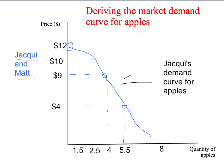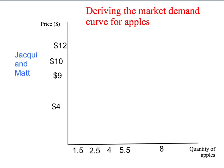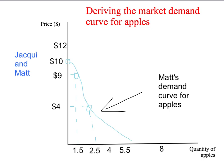This blue downward-sloping demand curve is Jackie's demand curve that we've seen before. Now what about Matt's demand curve? Let's suppose that Matt doesn't like apples as much as Jackie. If the price of apples is $10 or more per kilogram, he doesn't want to buy any. If the price is $9 per kilogram, he'll buy some apples, but since he doesn't really like them that much, he may only want to buy one and a half kilograms per week. And even if the price drops all the way to $4 per kilogram, Matt may only want to buy two and a half kilograms per week. Joining those points up, we get Matt's individual demand curve for apples.